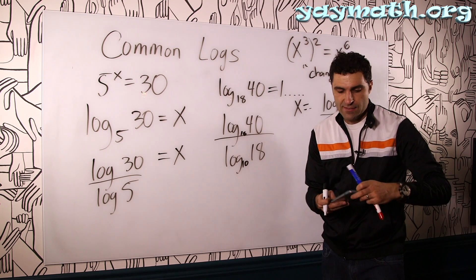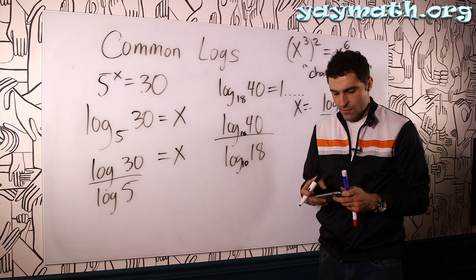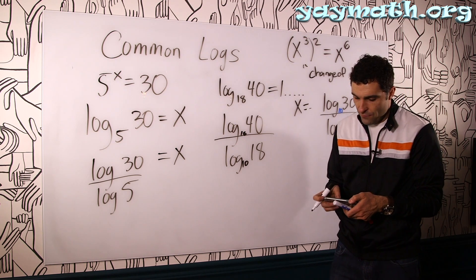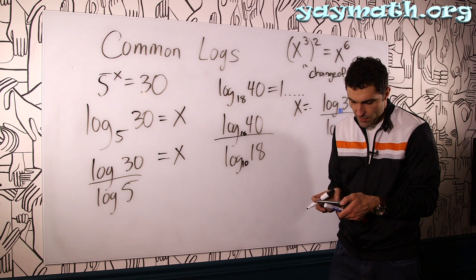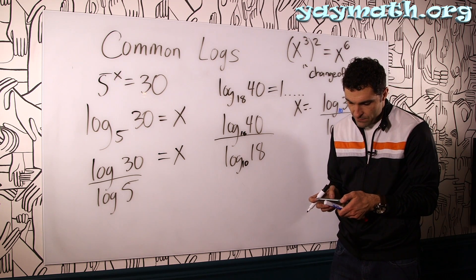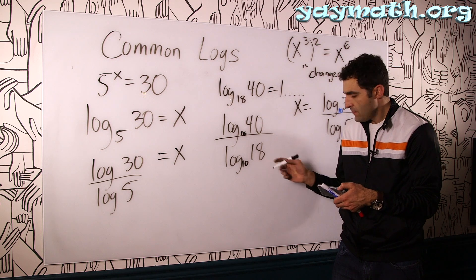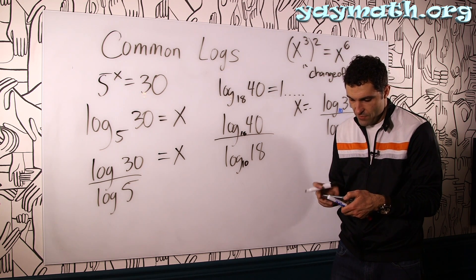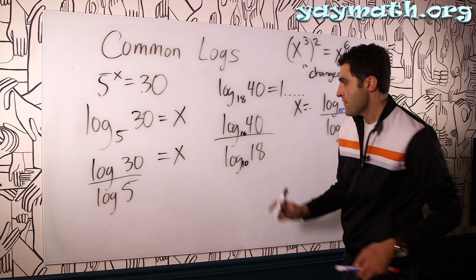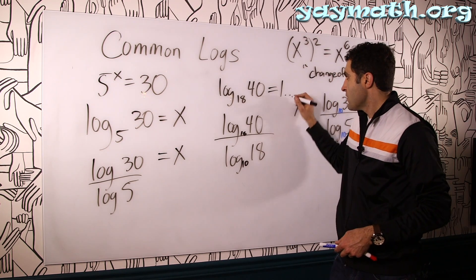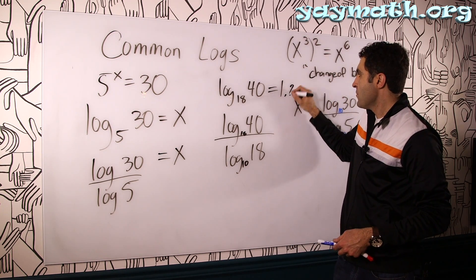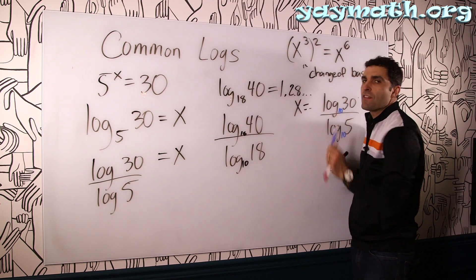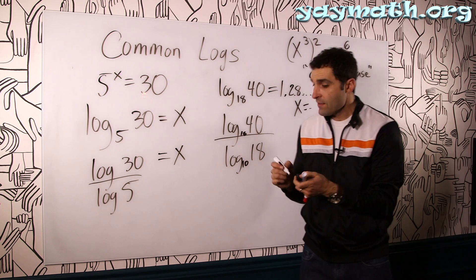Let's verify on the calculator one more time: 40 log divided by 18 log equals approximately 1.28. So this means 18 to the 1.28 results in the number 40.